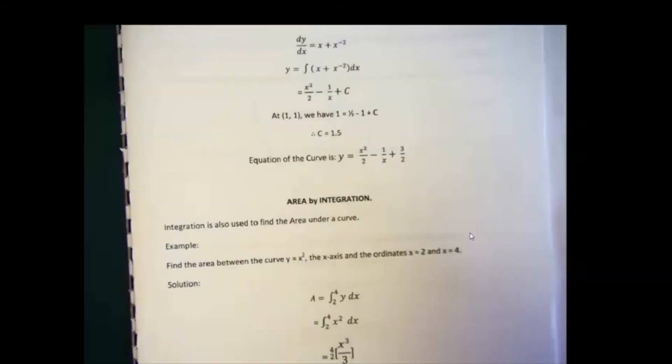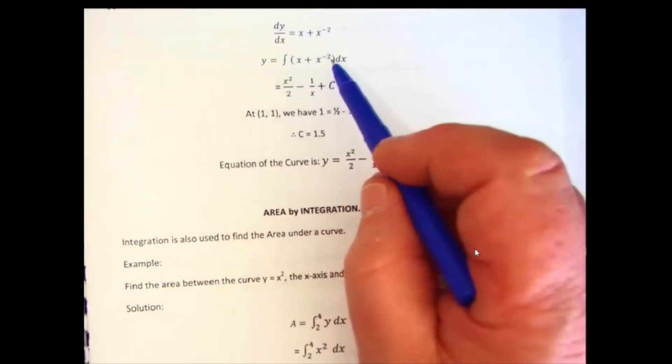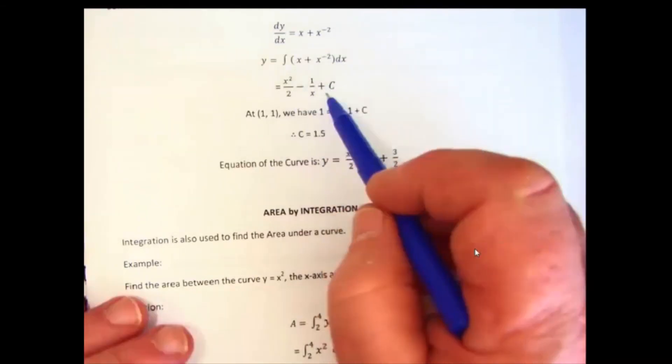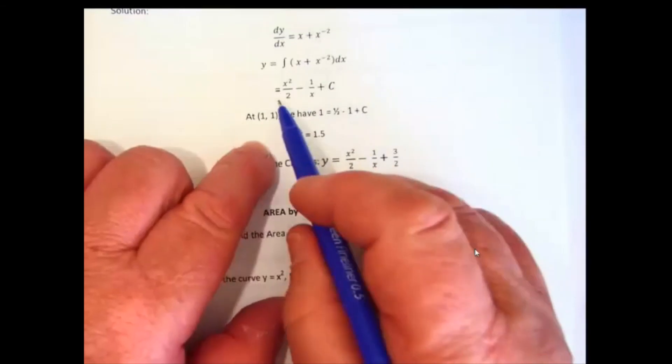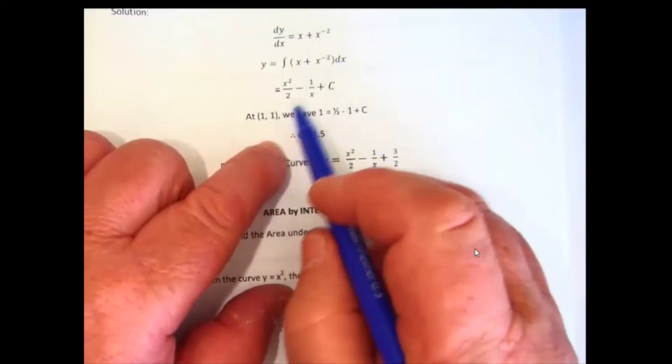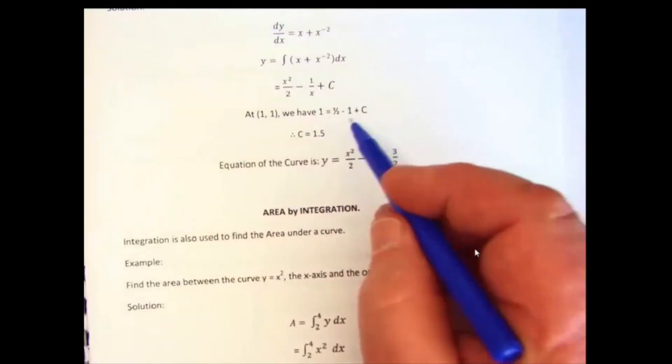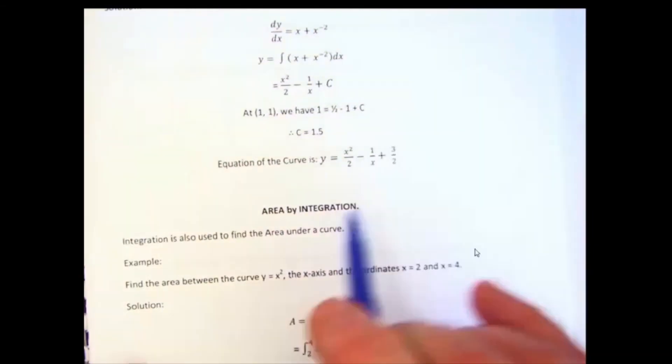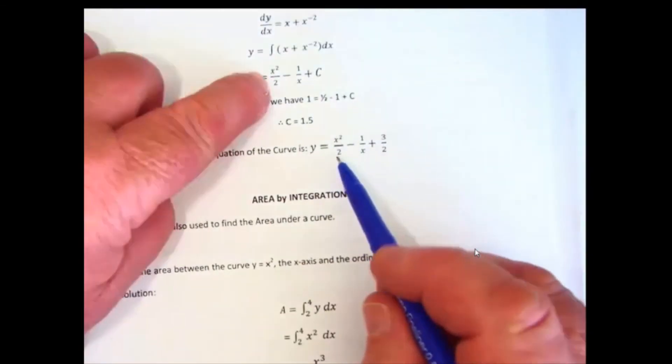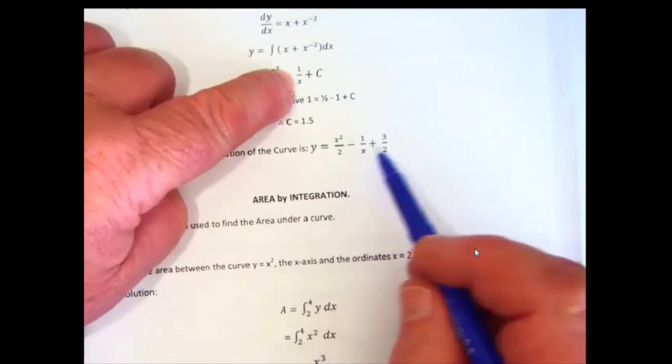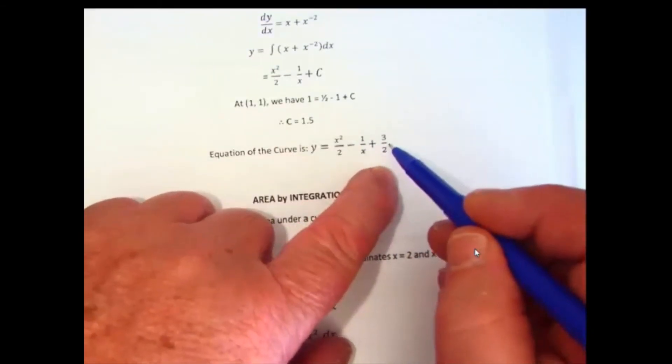Now, if we integrate that, raise the power by 1, divide by the power, this is what we get. Raising this power by 1, we get minus 1. So integrating, we get this term, and then at this point, we put 1 in place of y and 1 in place of x. Work it through, very simply, and you find that c equals 1 and a half. So the equation of this particular curve, then, is written out as y equals x squared over 2, minus 1 over x, and this is the value c. 1.5 is the same as 3 over 2.